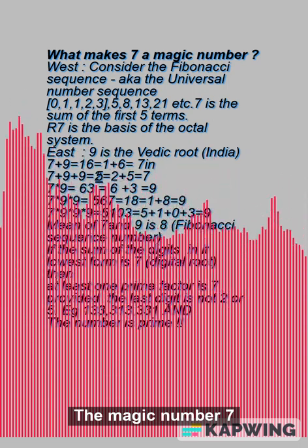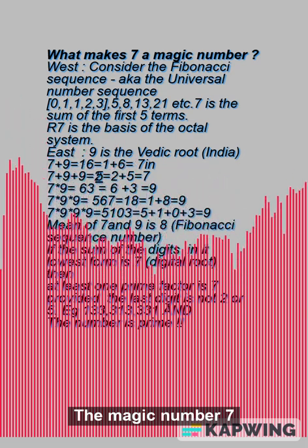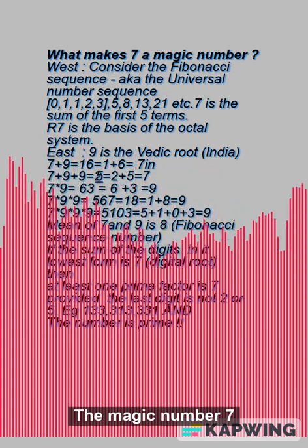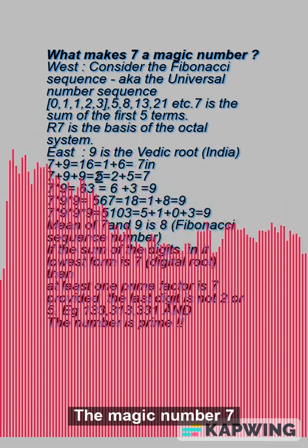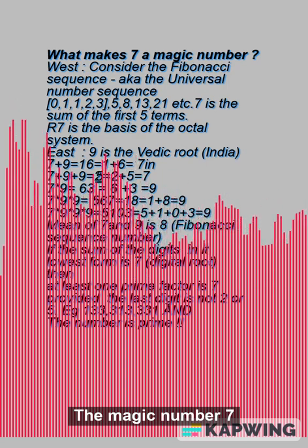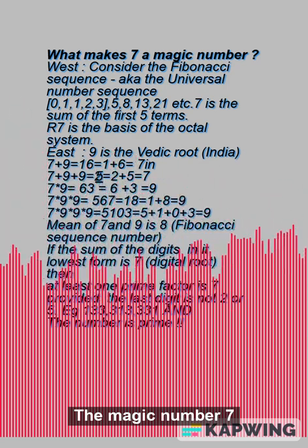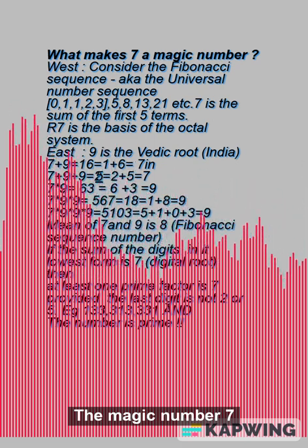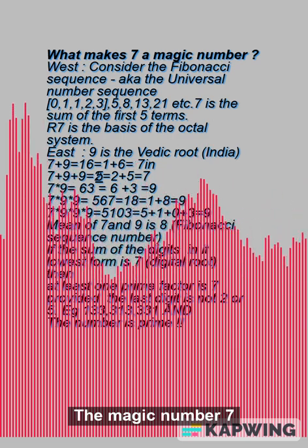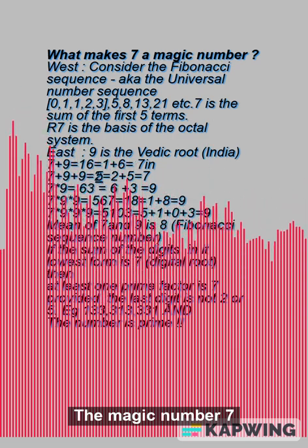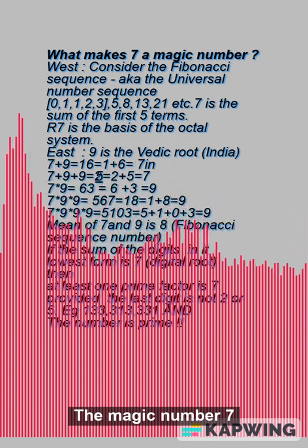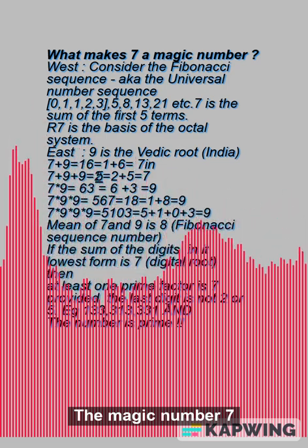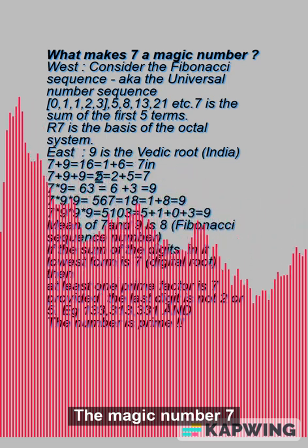East: 9 is the Vedic root in India. 7 plus 9 equals 16, equals 1 plus 6 equals 7. 7 plus 9 plus 9 equals 25, equals 2 plus 5 equals 7. 7 times 9 equals 63, equals 6 plus 3 equals 9. 7 times 9 times 9 equals 567, equals 18, equals 1 plus 8 equals 9. 7 times 9 times 9 times 9 equals 5103, equals 5 plus 1 plus 0 plus 3 equals 9. The mean of 7 and 9 is 8.